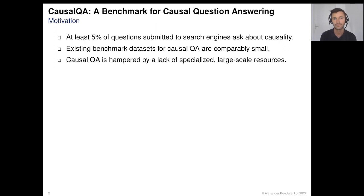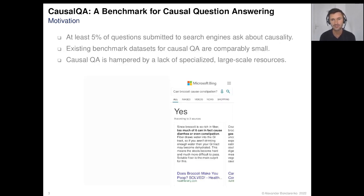Our review of related literature in causal question answering showed that existing benchmark datasets are comparably small, so that causal question answering can be hampered by a lack of specialized and large-scale resources. Similar challenges can also be met in web search.